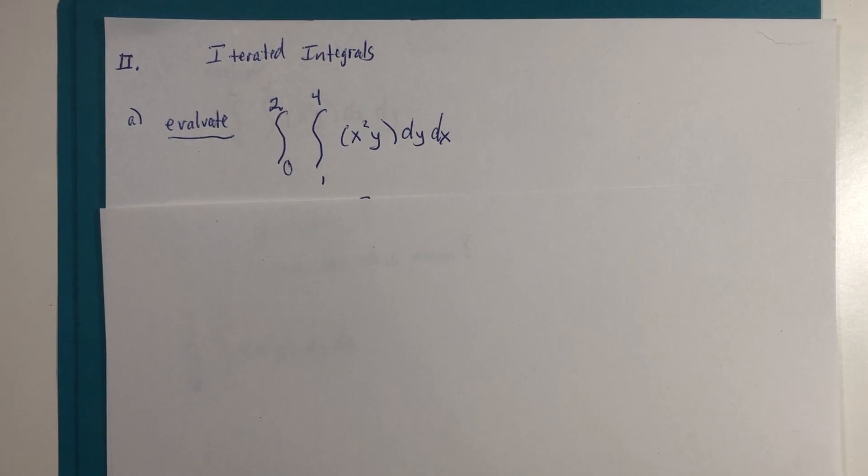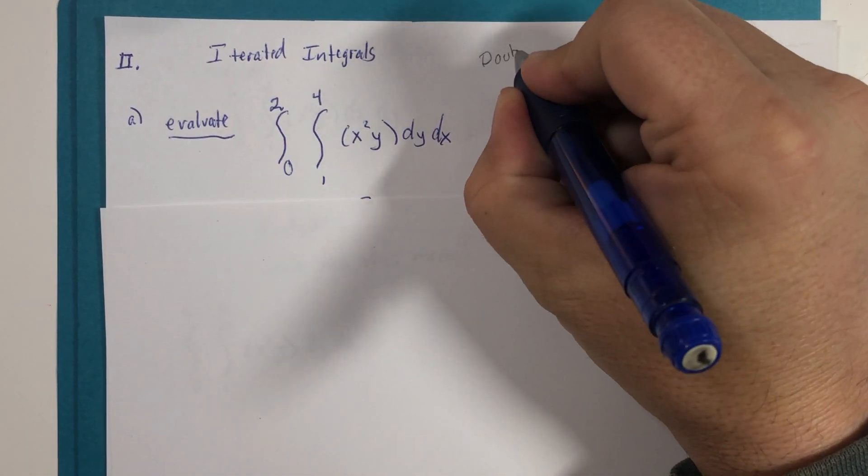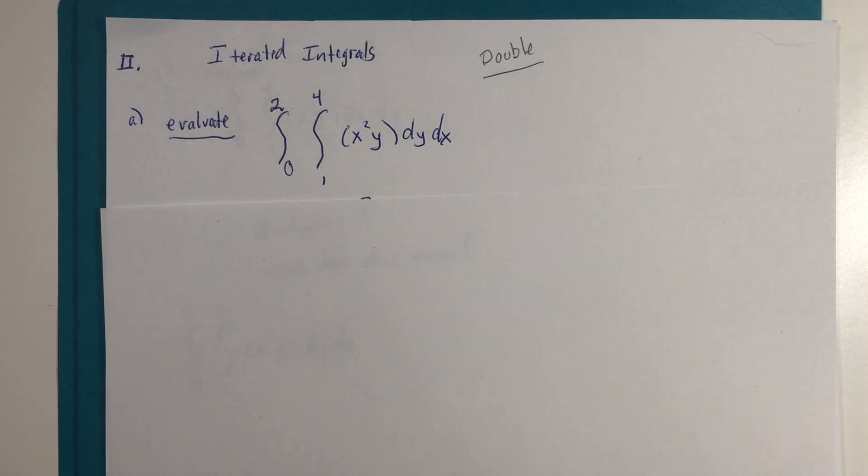Well, here we are. Iterated integrals. This one would be called, of course, a double integral in the English language, because there are two integration symbols and two variables.